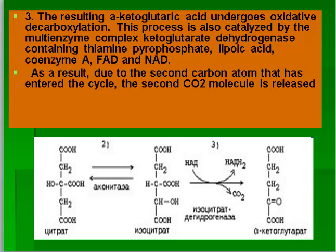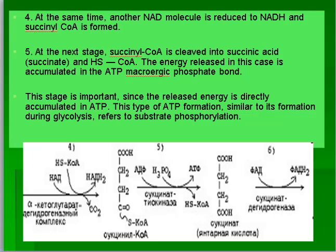The resulting alpha-ketoglutaric acid undergoes oxidative decarboxylation, catalyzed by the multi-enzyme complex ketoglutarate dehydrogenase, which contains thiamine pyrophosphate, lipoic acid, coenzyme A, FAD, and NAD. As a result, due to the second carbon atom that entered the cycle, the second carbon dioxide molecule is released. Another NAD molecule is reduced to NADH, and succinyl-CoA is formed. At the next stage, succinyl-CoA is cleaved into succinic acid (succinate), and the energy released is accumulated in the ATP macroergic phosphate bond via substrate phosphorylation, similar to ATP formation during glycolysis.